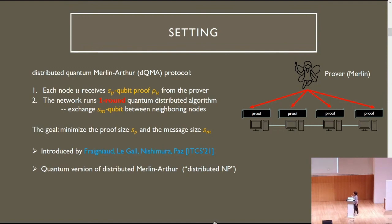This is a DQMA protocol, first introduced by Nishimura and Paz two years ago. This can be viewed as a quantum version of distributed Merlin-Arthur, which is the notion of distributed NP.